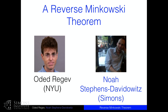We'll start with the actual program now. Our first speaker is Noah Steven Stavidowitz, who's at Simon's now and has been an MIT postdoc. He'll talk about his work with his PhD advisor Oded Regev from New York University on a topic of geometry. This work was a real breakthrough — it proves a conjecture of Daniel's from a few years earlier — and the applications to computer science are just starting to emerge.